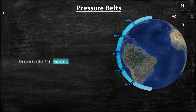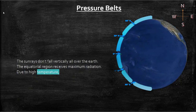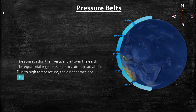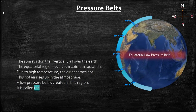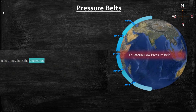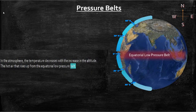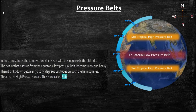The sun rays don't fall vertically all over the earth — the equatorial region receives maximum radiation. Due to high temperature, the air becomes hot and rises up in the atmosphere, creating a low pressure belt called the equatorial low pressure belt, present between 5 degrees north and 5 degrees south latitude. The hot air that rises up becomes cool and heavy, then sinks down between 30 to 35 degrees latitudes on both hemispheres, creating high pressure areas called subtropical high pressure belts.